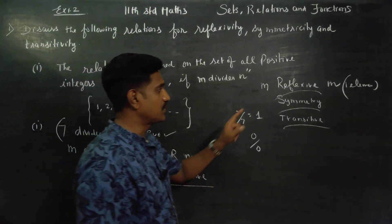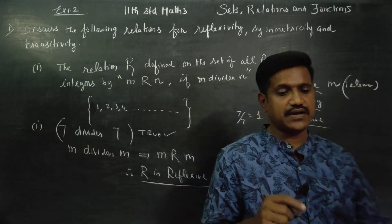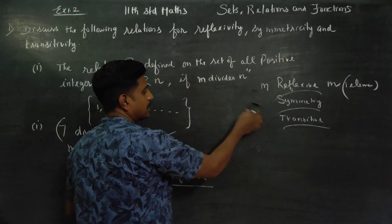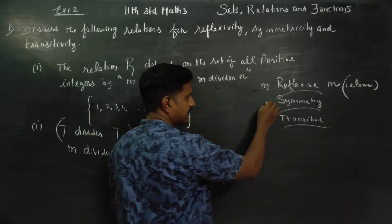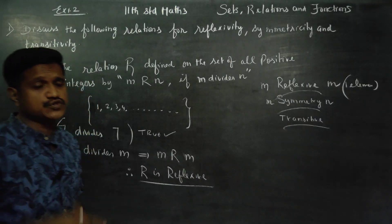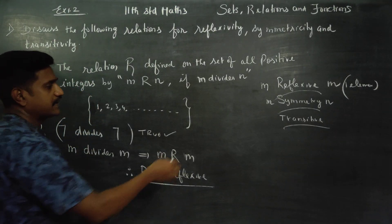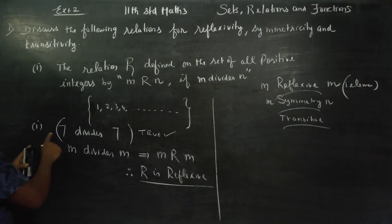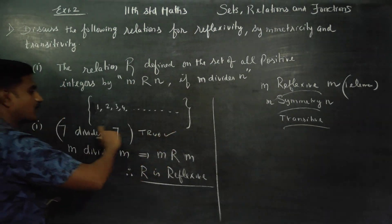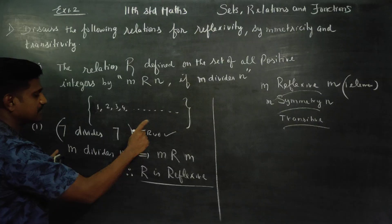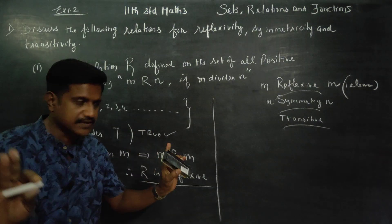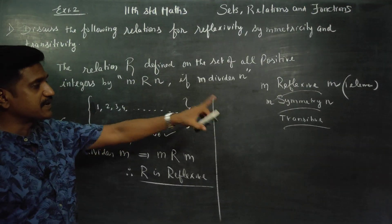After finishing reflexive, we are entering into symmetry. For symmetry, we use two letters M and N. Use the same letters — this is just for your understanding. That means symmetry: you have to choose two numbers.